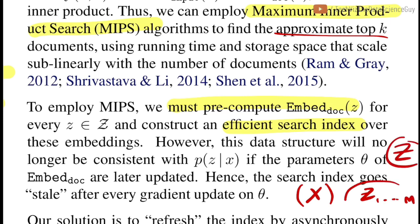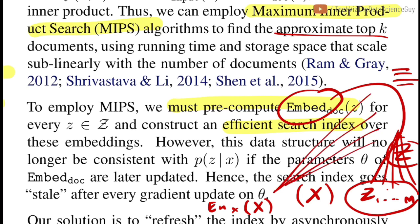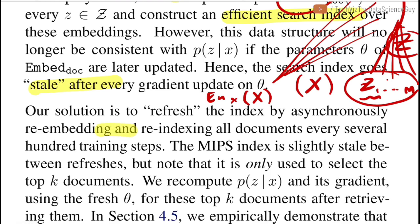MIPS requires pre-computing embeddings and storing them as an index. The Embed_Doc model pre-computes embeddings for each document in corpus Z and indexes them. For each new input x, Embed_Input is called and the dot product with all stored embeddings is computed efficiently. However, since Embed_Doc is a learned function, its parameters update during back-propagation, making the stored index stale after each update. To handle this, the embeddings are asynchronously refreshed and all documents are re-indexed after a certain number of training steps.